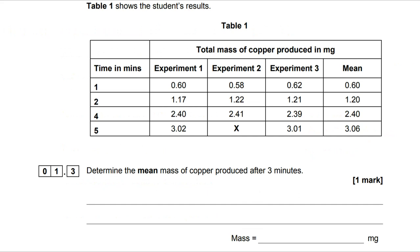We're going to move on to 1.3, and we want to know the mean mass of copper produced after three minutes. You've got to work your way around the data on the table. In particular, I'm looking at the fact that we've got one minute, two minute, four minutes, five minutes, and three minutes is somewhere in the middle. What I can then do is start to look at the gaps.